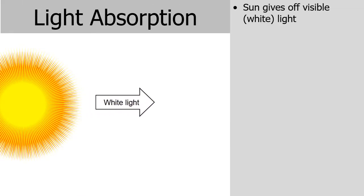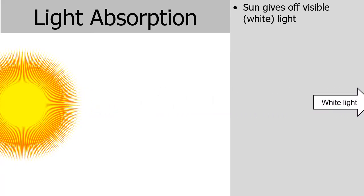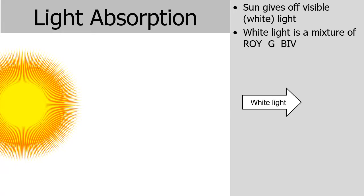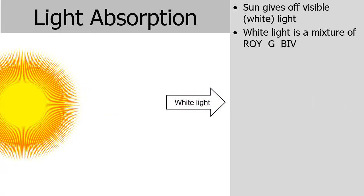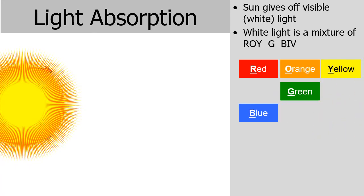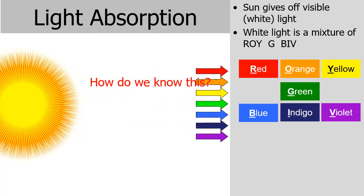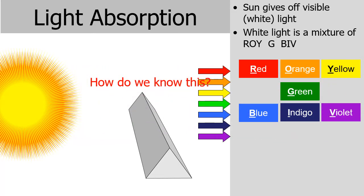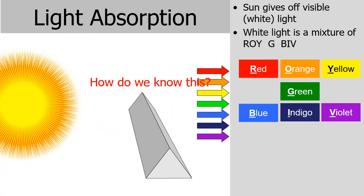When we focus on the light given off by the sun, visible light is also known as white light. White light is actually a mixture of something called ROYGBIV — the colors of the rainbow: red, orange, yellow, green, blue, indigo, violet. If you shine a white light source into a prism, a rainbow comes out the other side.